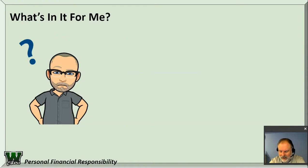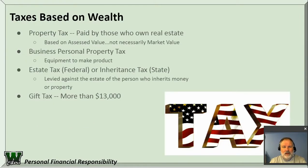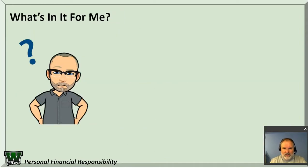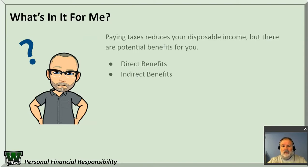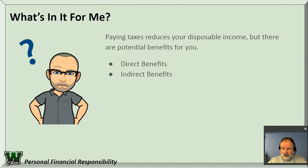So, what's in it for you? You pay all this stuff — whether it's wealth or income or sales or whatever. It reduces your disposable income, but there are benefits for you — direct benefits and indirect benefits. For example, look at your street: it costs money to plow the streets, and it takes money to do that — you pay for that with your taxes. Your education — you pay for public schools with your taxes. Road upkeep. Those are some examples of direct benefits.